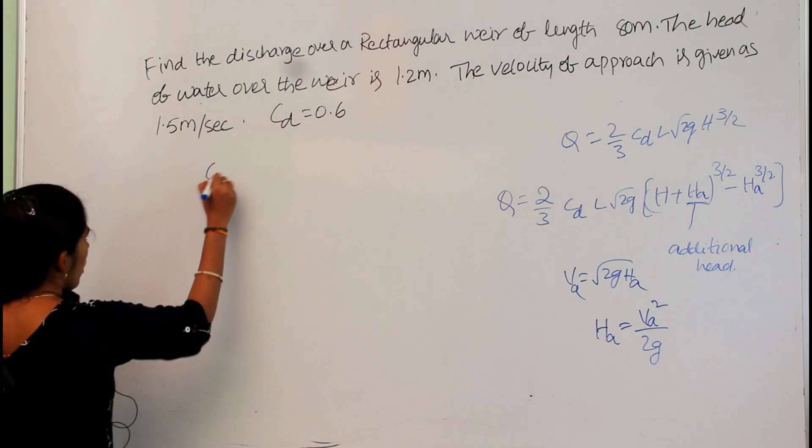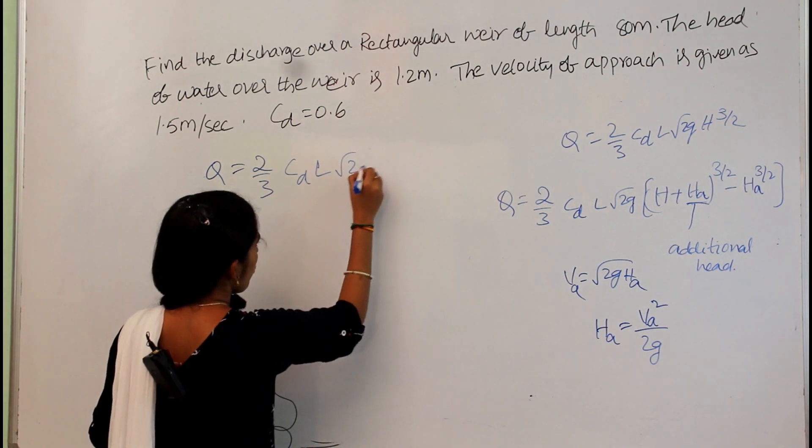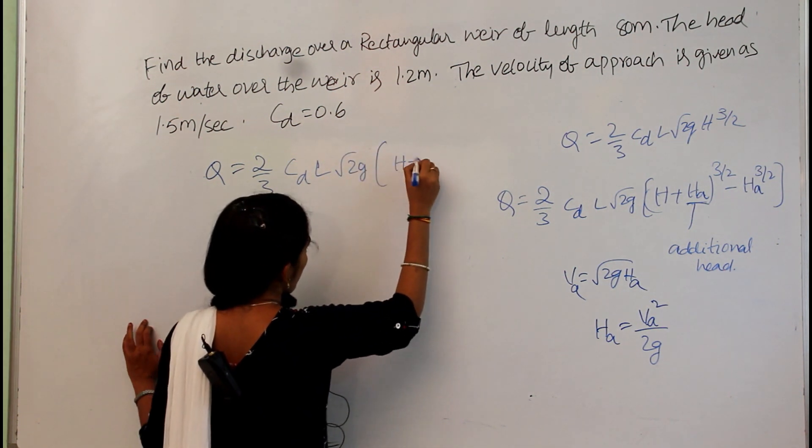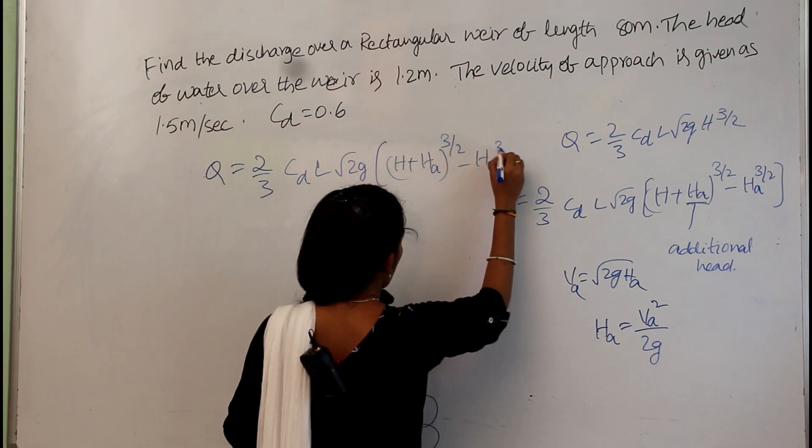Now substitute the equations in this formula: 2/3 cdl root 2g h plus ha power 3/2 minus ha power 3/2.